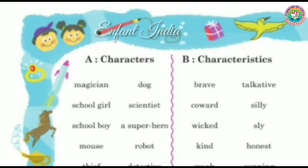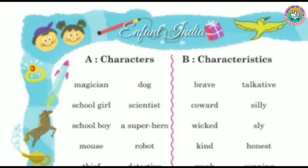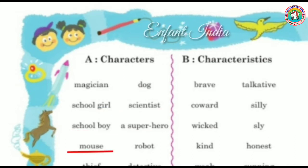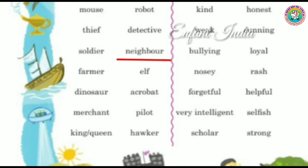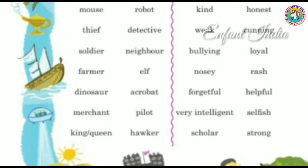Now, finding the characters — you must choose from the list. Column A characters include: Magician, Dog, School Girl, Scientist, School Boy, Super Hero, Mouse, Robot, Thief, Detective, Soldier, Neighbor, Farmer, Elf, Dinosaur, Acrobat, Merchant, Pilot, King, Queen, and Hawker. These characters are for Column A.